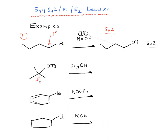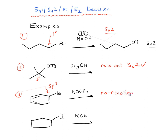In example two, we have a tertiary alkyl halide — we can rule out SN2 here. We can't yet make any other decisions; we haven't ruled out E2, so it remains a possibility based on what we know about the substrate alone. In example three, we have a bromine attached to what looks like cyclohexane, but it's actually a benzene ring — that's sp2 — so there's going to be no reaction here. We can't do SN1, SN2, E1, or E2 with an aryl halide.